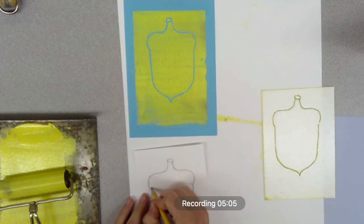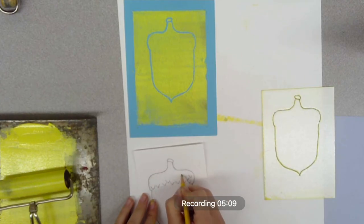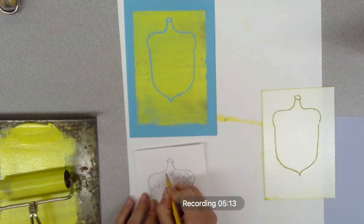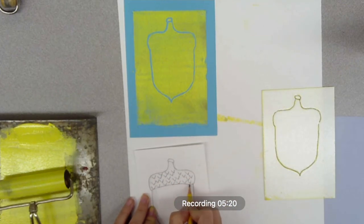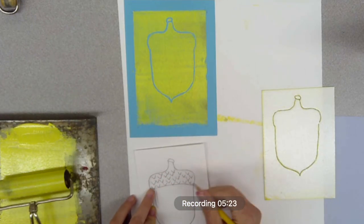Now I'm going to add a little more details to my acorn. I grabbed my paper, my original drawing, and I'm starting to add details on that. If you make a mistake you can always erase on the paper, but if you do it directly on the styrofoam you can't really erase that. I'm just playing it safe by doing it on the paper.